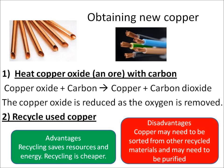Firstly, we're going to look at how we can obtain new copper. We can either dig copper oxide out of the ground and then react it with carbon. Copper oxide reacts with carbon to form copper and carbon dioxide. So we can say that the copper oxide, because it's lost the oxygen, it has been reduced.